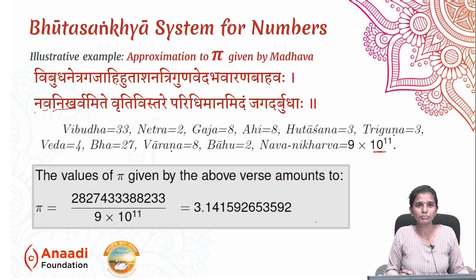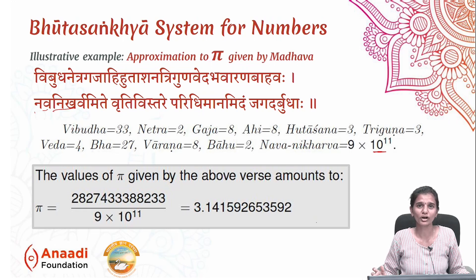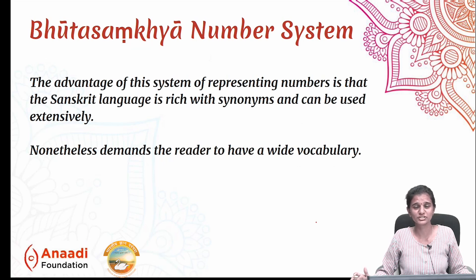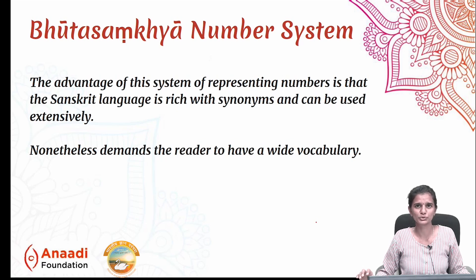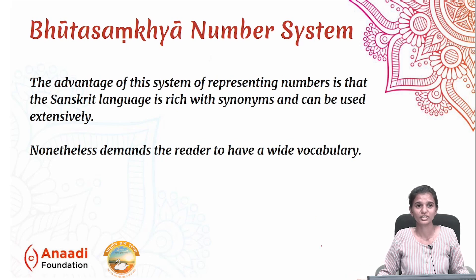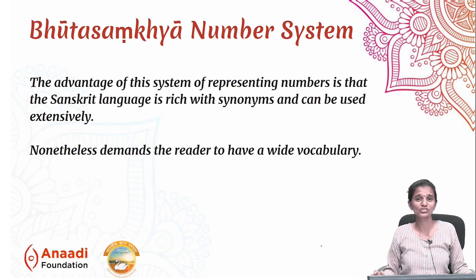We will understand pi and its nuances in later sessions. Thanks to the Bhouta Sankhya number system, we have got the value of pi correct to 11 decimal places and also learned a fun verse. The advantage of this system is that there are many words in Sanskrit representing the same numbers, making it very easy for poets to compose verses in different meters. However, one must have a rich vocabulary to understand these words. These are some of the ingenious methods our Indian mathematicians used to represent numbers. Thank you. Dhanyavada.